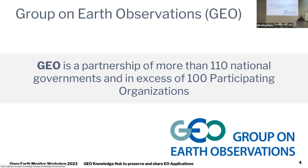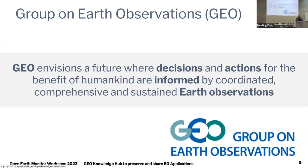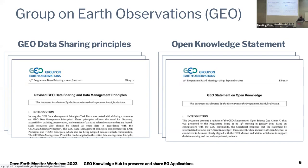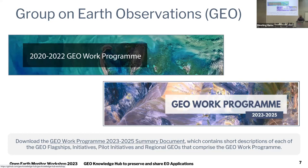The GeoKnowledgeHub started in the context of the Group on Earth Observations (GEO), which is basically a partnership of more than 110 national governments and more than 100 participating organizations. This huge community envisions future decisions and actions for the benefit of humankind, informed by Earth observation data, tools, and analysis. GEO has data sharing and open knowledge statements, and also GEO work program activities to address environmental and societal challenges.